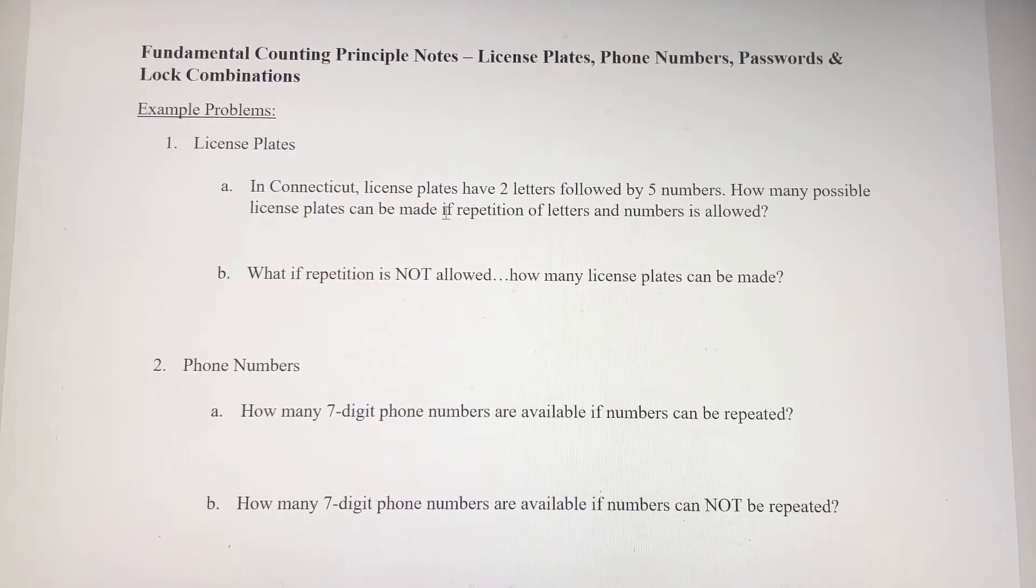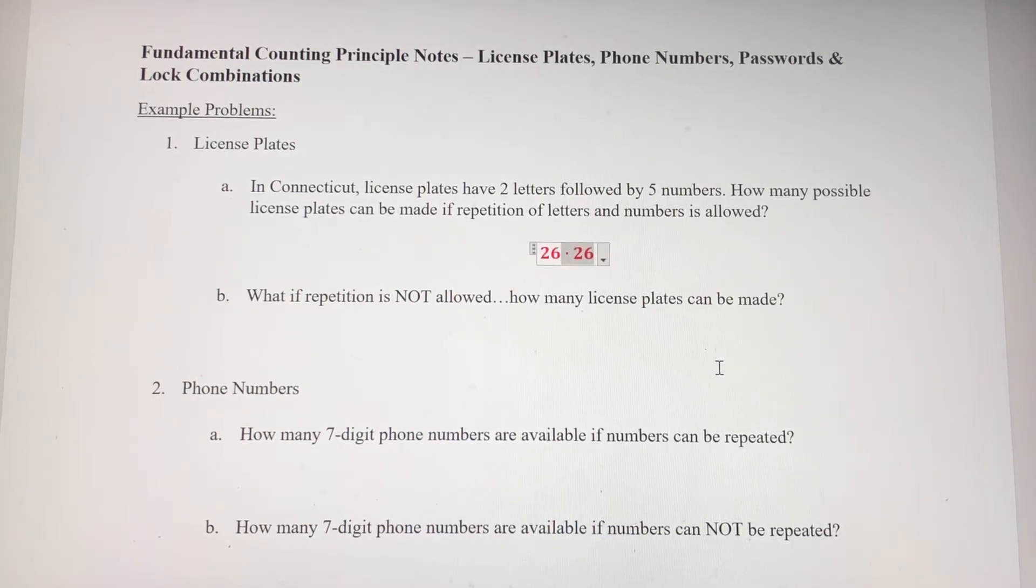In Connecticut, license plates have two letters followed by five numbers. How many possible license plates can be made if repetition of letters and numbers is allowed? That concept of repetition is a huge qualifier here when we're talking about possibilities. So if we think about the two letters that come first, there's 26 letters in the English alphabet. So there's 26 possible values that could go in those first two locations on the license plate.